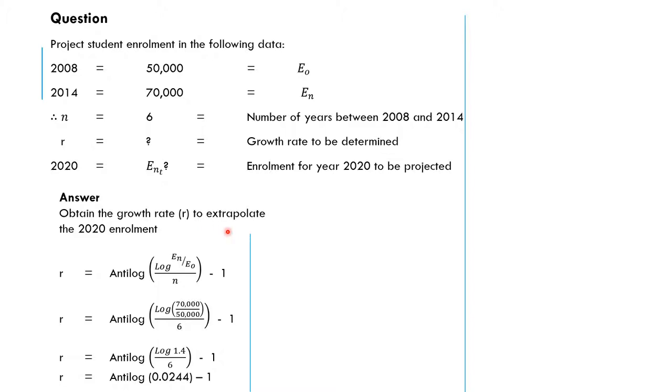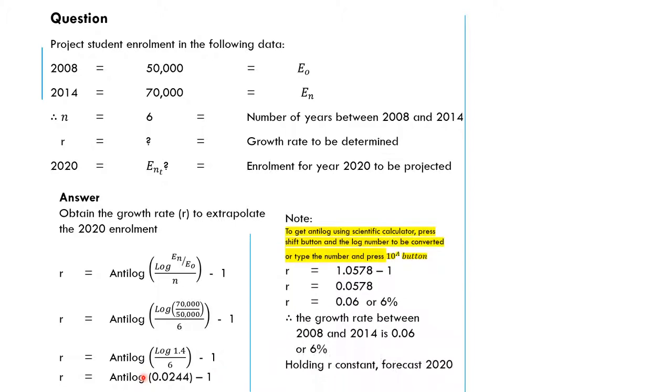The answer: obtain the growth rate. So the first thing is for you to bring in the formula that we have and substitute into the formula. If you go by the formula, the n here, the enrollment in the current year is 70,000, and the enrollment in the initial year is 50,000 over n, which is 6. So when you substitute, it will give you anti-log(0.0244) minus 1.